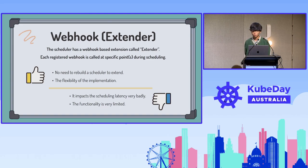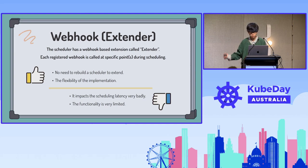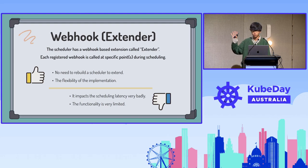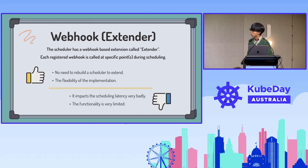However, there are downsides: overhead and lack of functionality. The latter is critical because it only has four points where users can register WebHooks — not enough, since the framework has many more extension points. We can't just increase the number of WebHook points because of the overhead: frequent API calls between the scheduler and the WebHooks would slow down the scheduler too much.